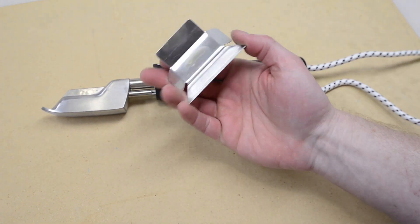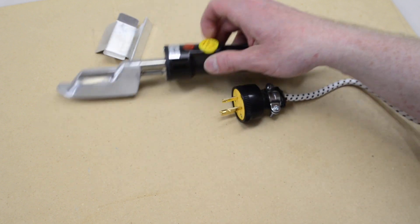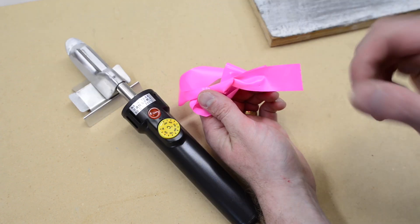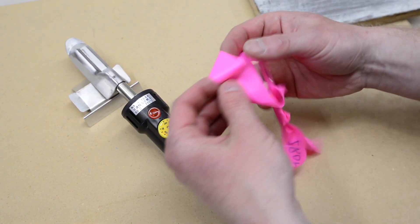Never rest your iron on a flammable surface when it's plugged in. If yours didn't come with a stand, you can make one like this from an empty aluminum can. You should also never leave an iron unattended when it's plugged in.